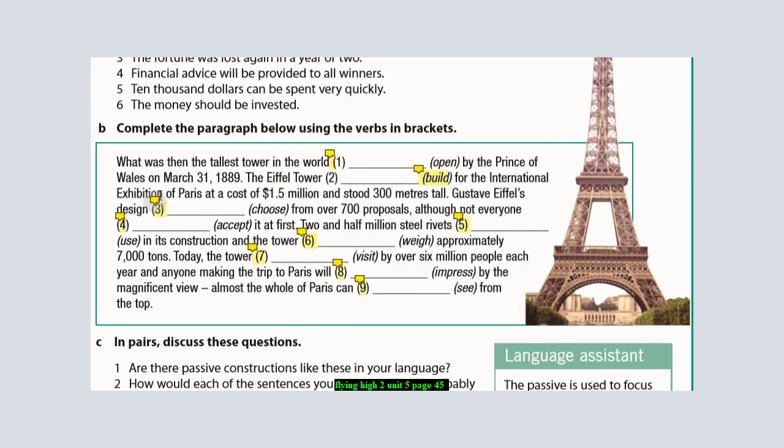'Was built' for the International Exhibition of Paris at a cost of 1.5 million and saved 300 meters. Still using the past tense, the answer here is 'was chosen' - 'chosen' is the past participle of 'choose' - from over 700 proposals, although not everyone... Number four: at first, two and a half million steel rivets. Notice all the sentences here are in the past, so the answer is 'were used' in its construction.